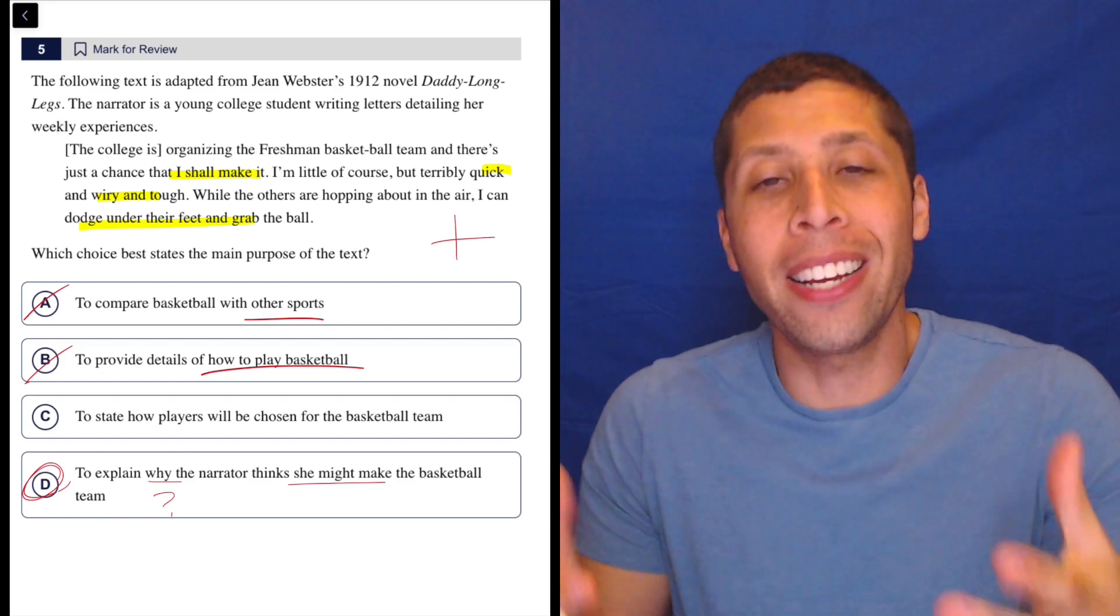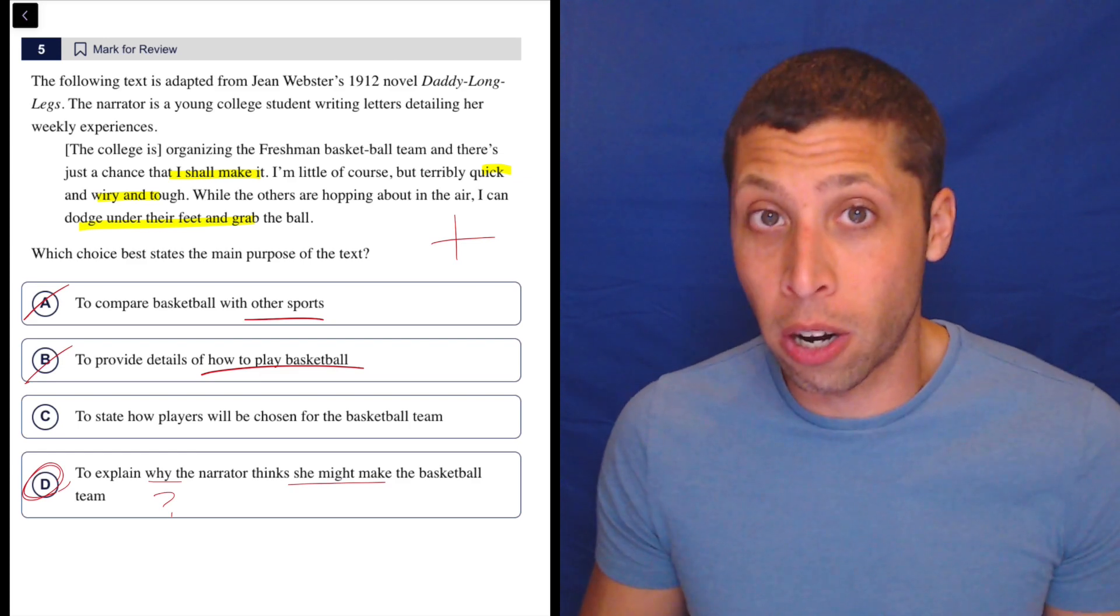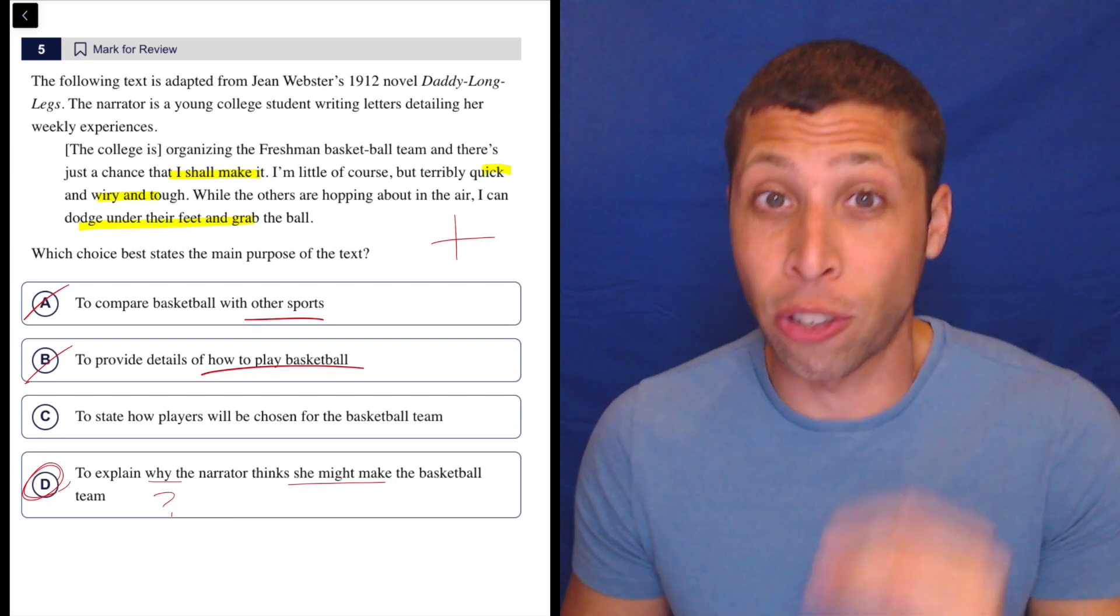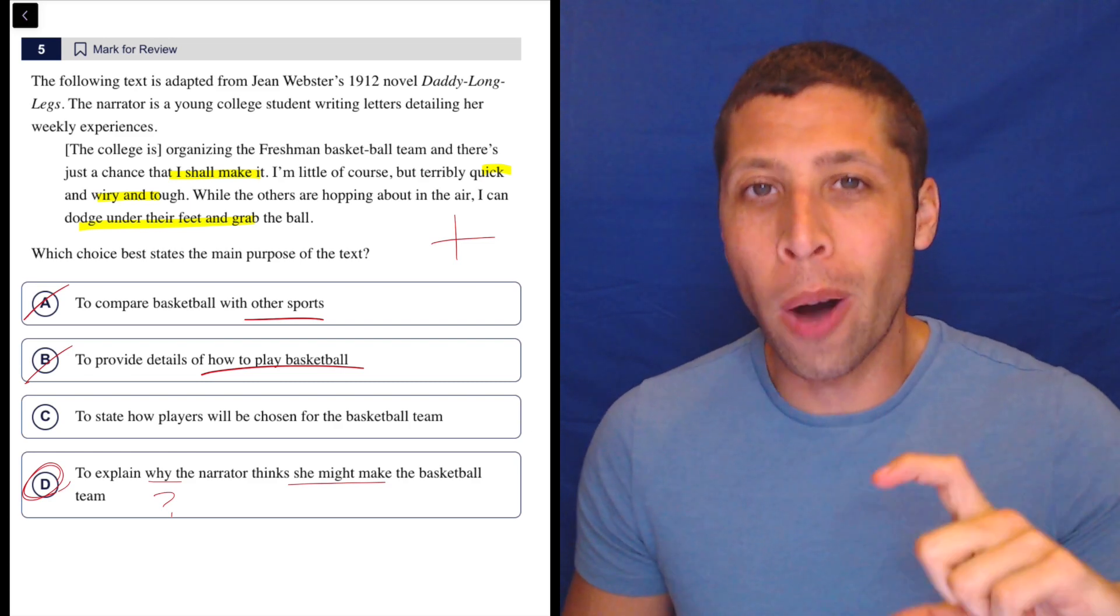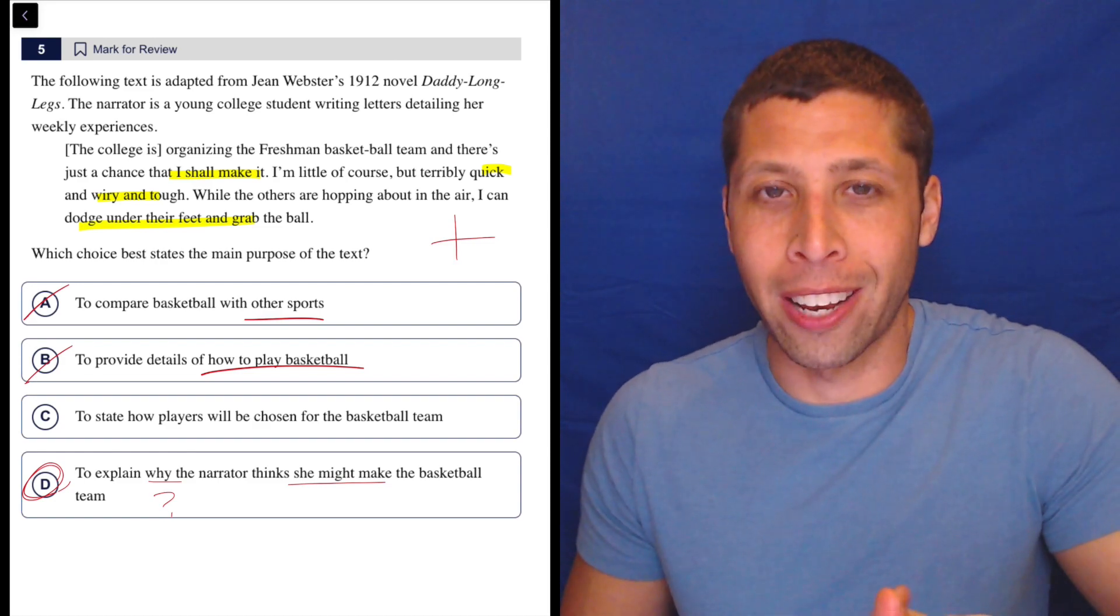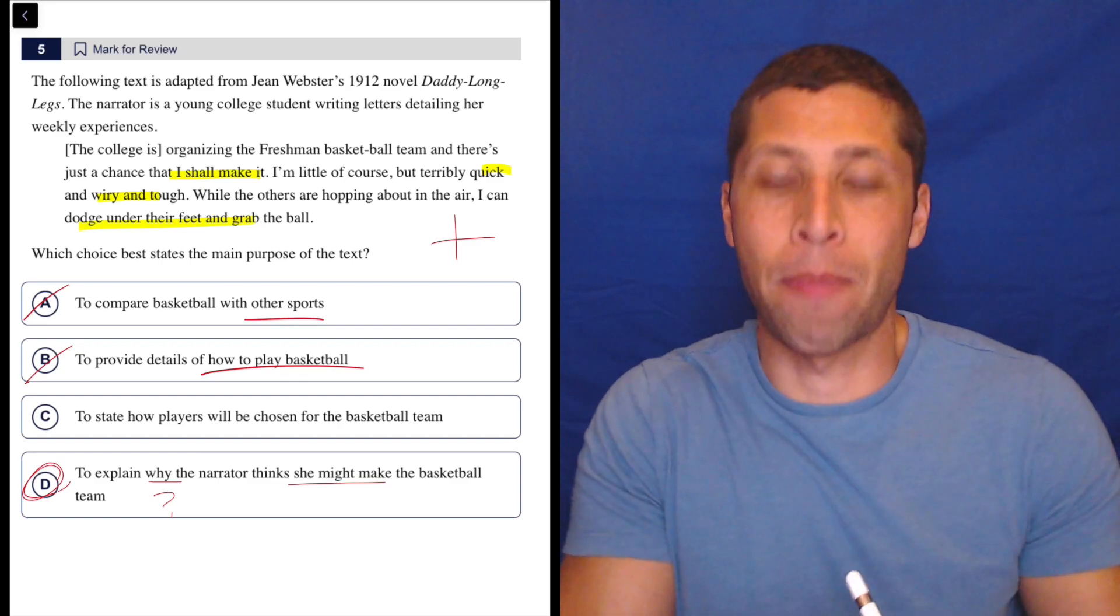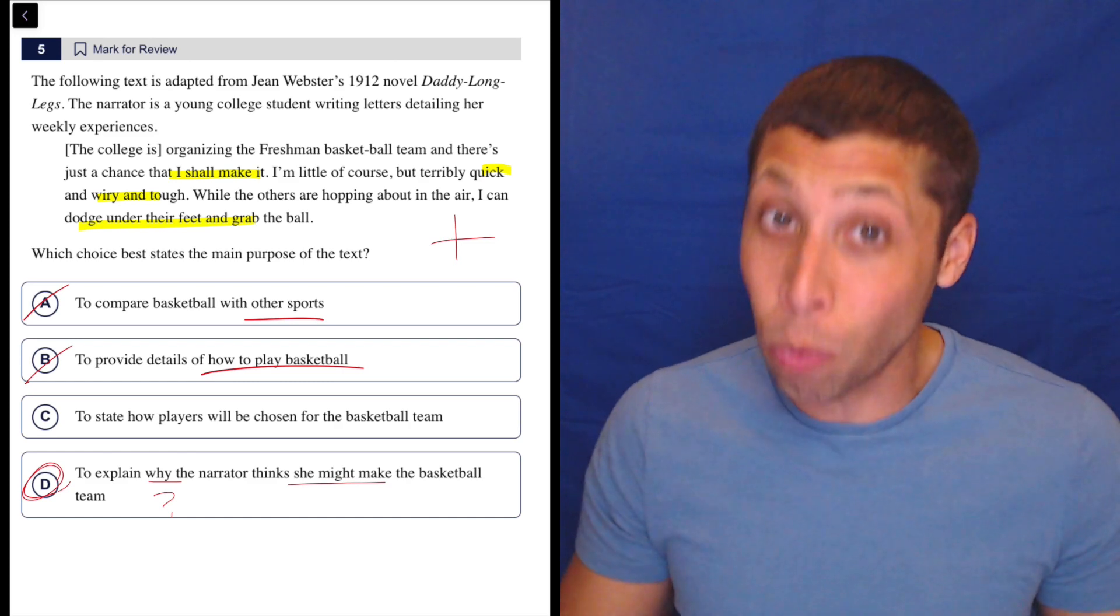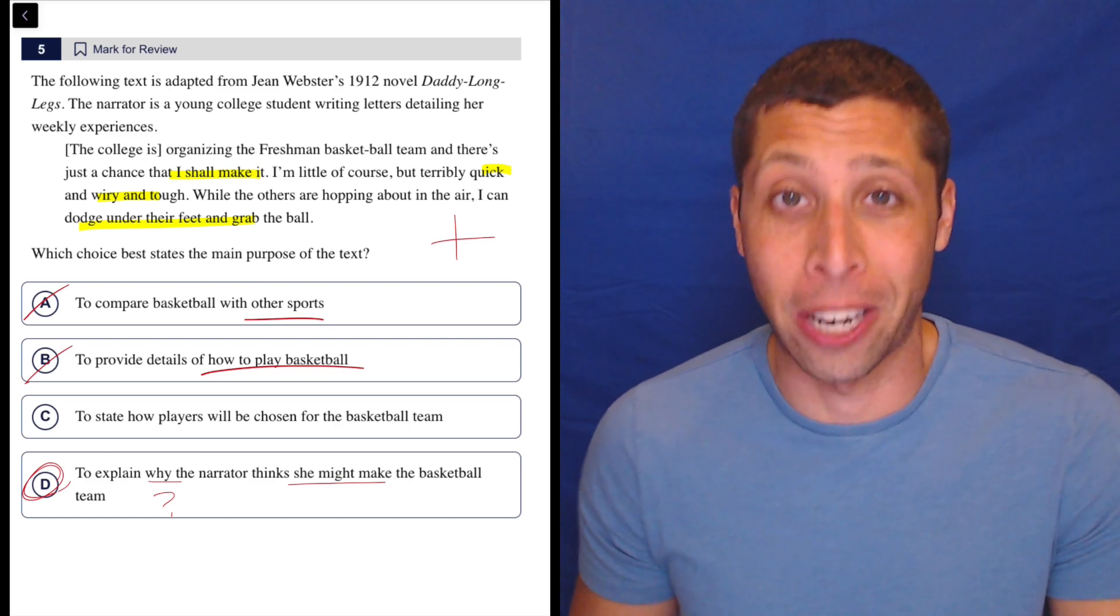Now that might seem really obvious and easy on this question. This isn't particularly hard. But I think that's a very useful skill that we need for all sorts of reading questions, including some very hard ones. So get in that habit of, if you want to justify a choice, see if you can turn it into a question. And then see if you can answer that question by just pointing to something in the passage, right? Not coming up with your own reasoning, but pointing to lines in the passage. That's a really good sign that you have the evidence you need to pick that choice and be a hundred percent correct.